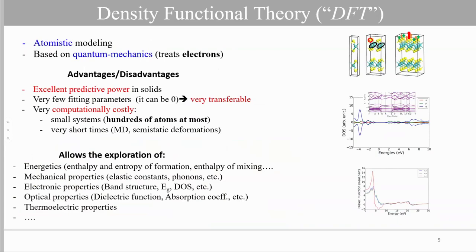So what are the properties that we can calculate with DFT? All the energy properties: enthalpy and entropy of formation of mixing, heat capacities. Mechanical properties: elastic properties, phonon dispersion. Several electronic properties such as band structure, gap, density of state, optical property, and also thermoelectric properties.